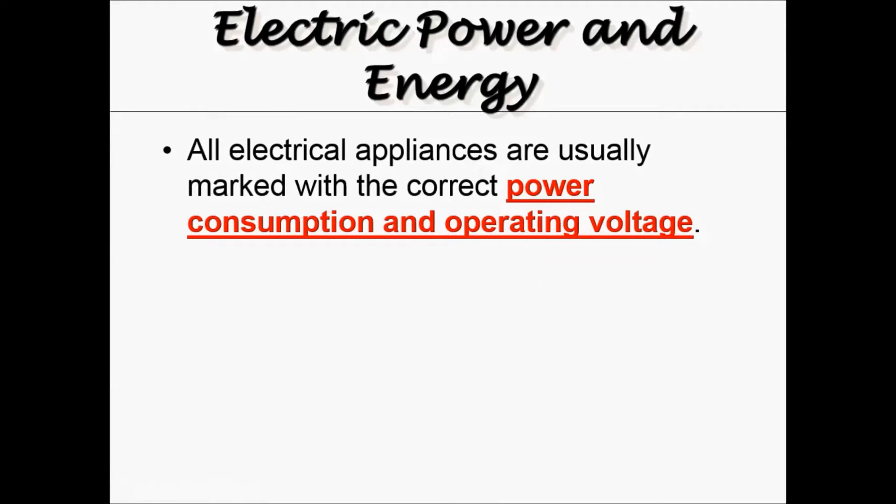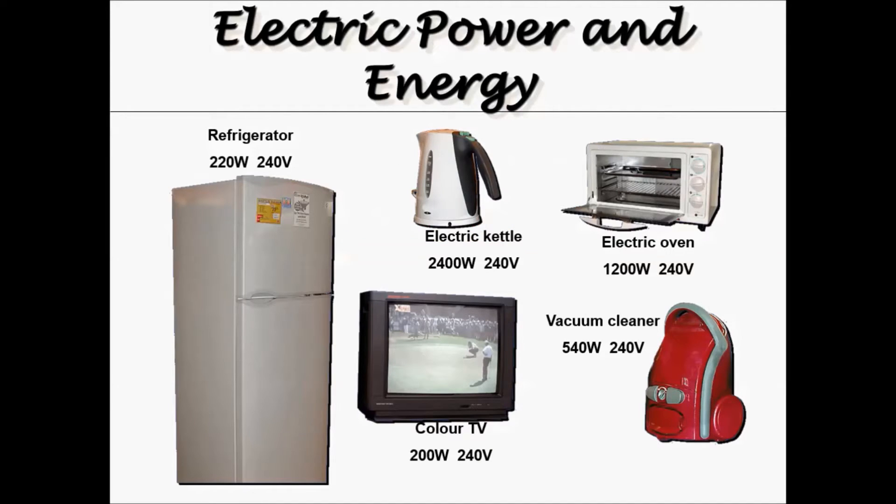For electric power and energy, all electrical appliances are usually marked with the correct power consumption and operating voltage. For example, a refrigerator has 220 W and 240 volts. You will recognize the V as the unit for volts and you should recognize the unit of W as the unit for power.